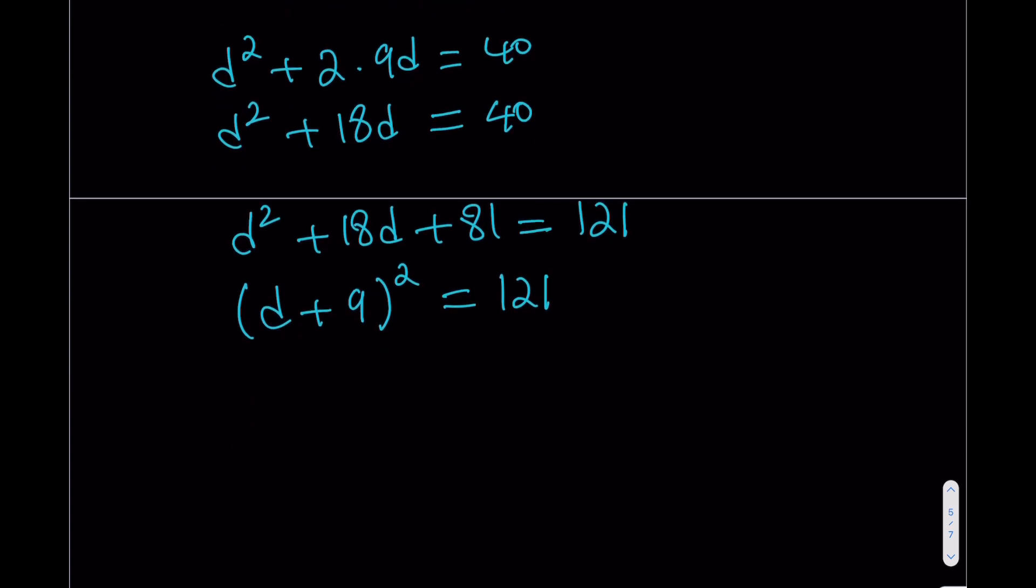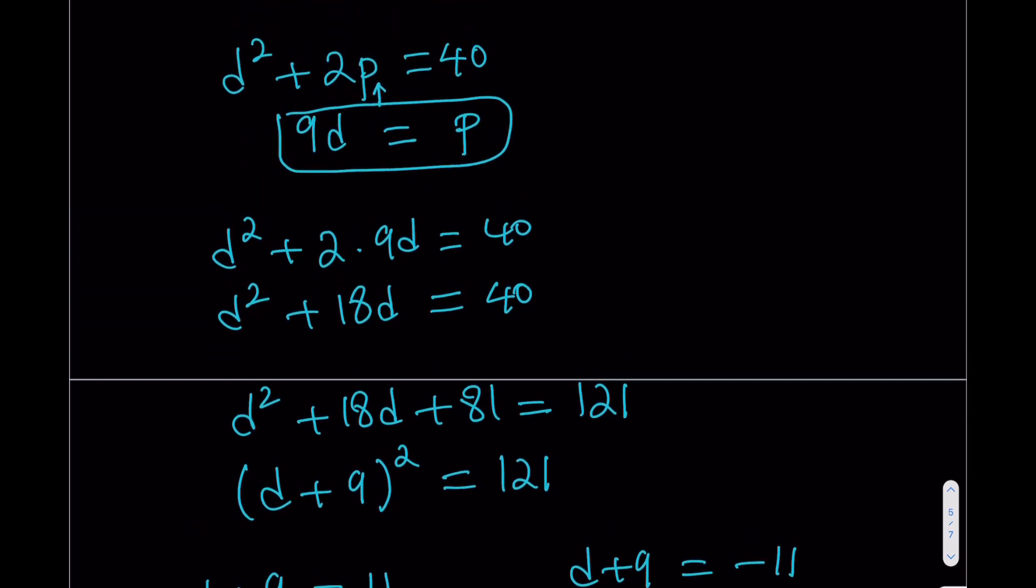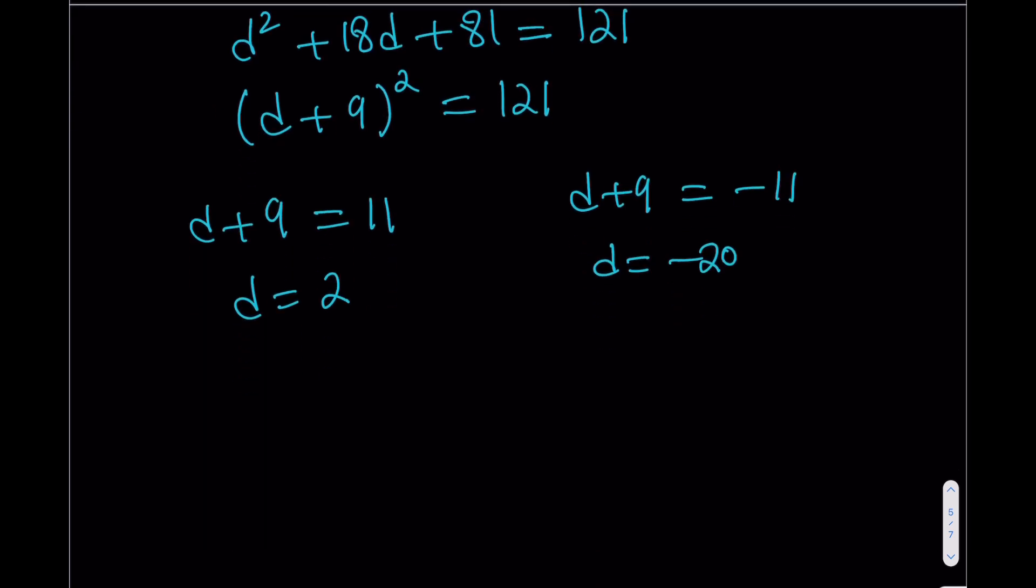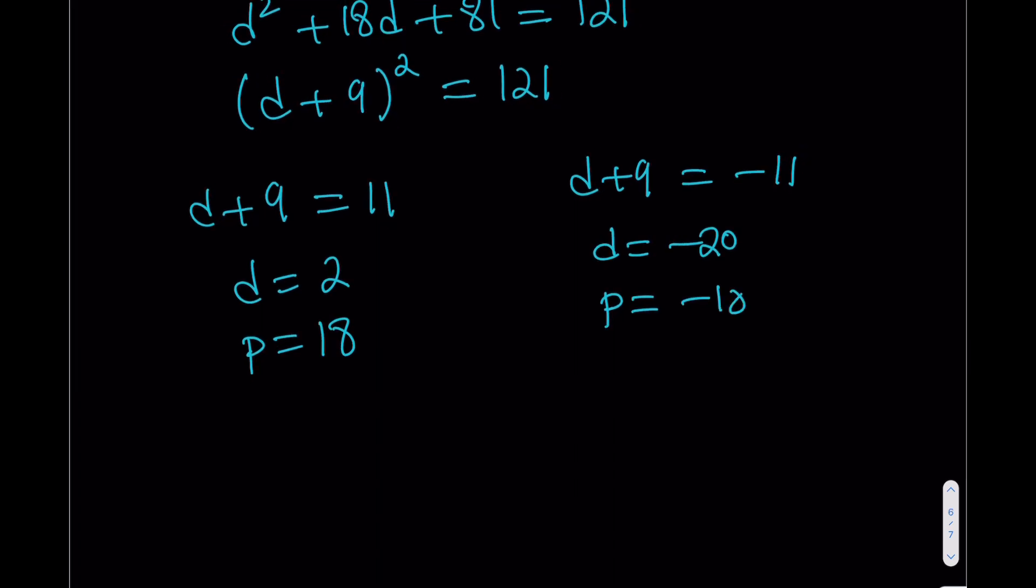D minus 9 is either 11 or negative 11, which means that D is either 2 or D is negative 20. So now we do have a nice relationship between P and D. If you go ahead and plug in D there, you'll get the P right away. P is 9 times D. So here P is going to be 18, and here P is going to be 9 times negative 20, which is negative 180. So now we have this pair and we have that pair.